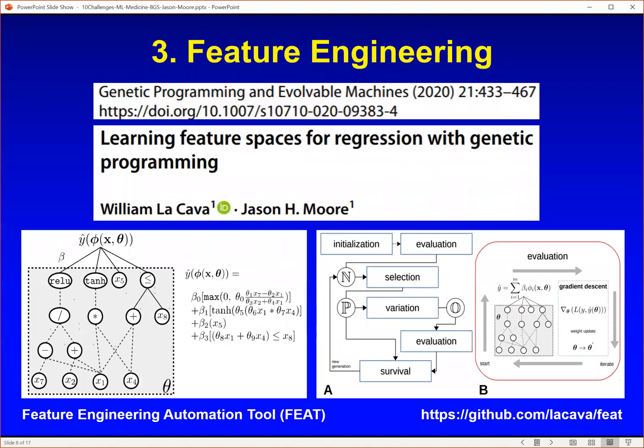I'm also a big believer in feature engineering. The data doesn't always come to us in the right format — sometimes it needs to be recoded or features need to be combined. We've worked on automated methods for figuring out the best ways to combine features. This is work done by Bill LaCava, research associate in the lab. This is his feature engineering automation tool, or FEAT, which automatically combines features with mathematical functions to produce new features that can be included in things like linear regression.